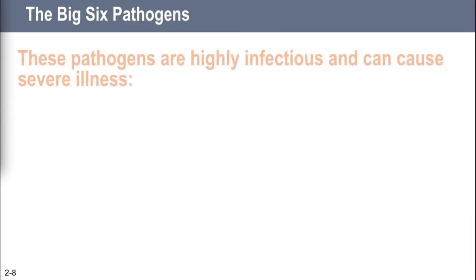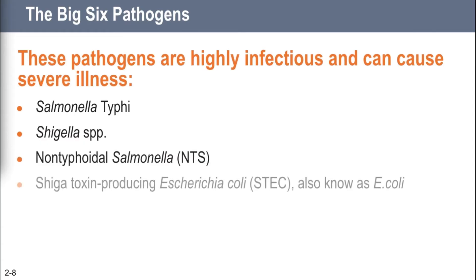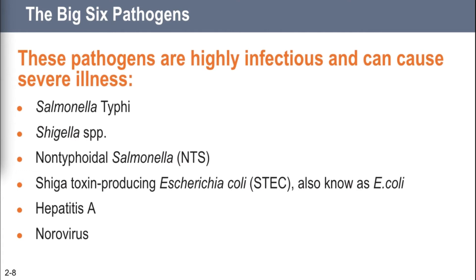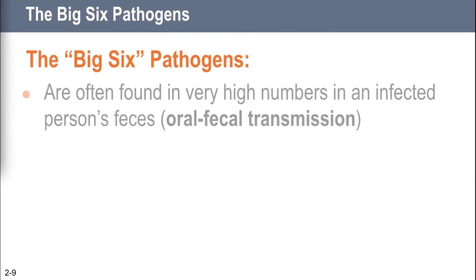Now let's talk about the Big Six pathogens. The first four are bacteria: Salmonella Typhi, Shigella spp., non-typhoidal Salmonella (NTS), and Shiga toxin-producing Escherichia coli (STEC) — commonly called E. coli. It's not the E. coli itself but the Shiga toxin that makes you sick. The last two are viruses: Hepatitis A and Norovirus. Four bacteria, two viruses — these are the majority of what's making people sick around the world.